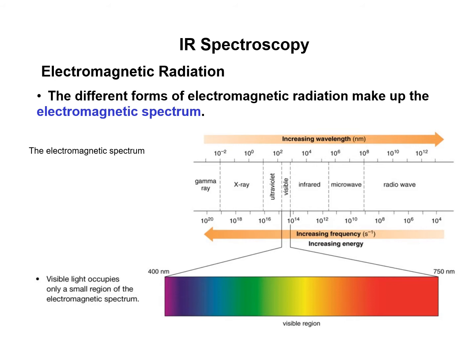The different forms of electromagnetic radiation make up the electromagnetic spectrum. Visible light occupies only a small region of the electromagnetic spectrum, from 400 nanometers to 750 nanometers.